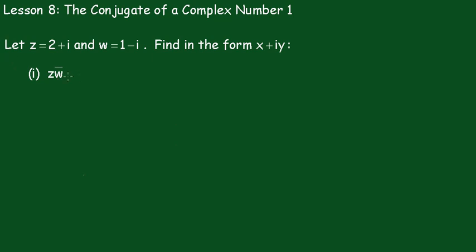And this will be equal to 2 plus i times 1 plus i. And moving those brackets we get 2 outside of 1 plus i plus i outside of 1 plus i.